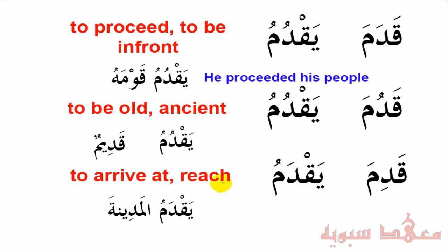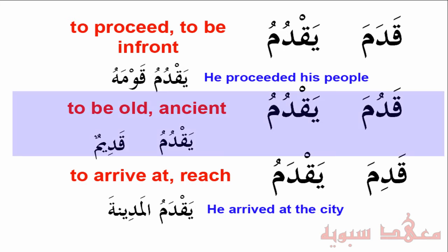The last verb category is qadima yaqdamu. The example is yaqdamu al-Madina, which means 'he arrived at the city.' Now there is a question: it is quite easy to see the relationship between 'to proceed, to be in front' and 'to arrive and to reach,' but how does the meaning 'to be old and ancient' fit in?